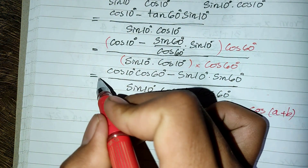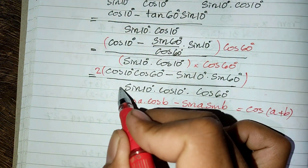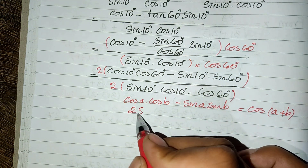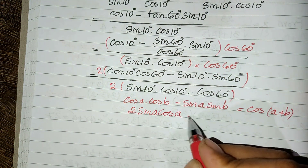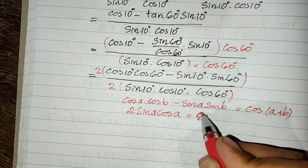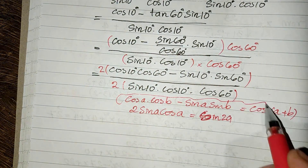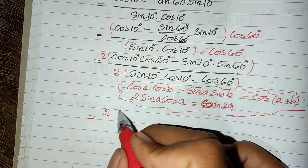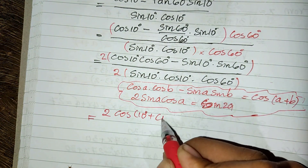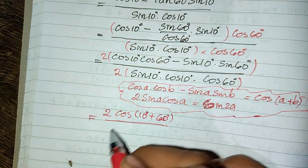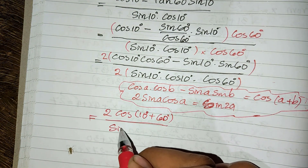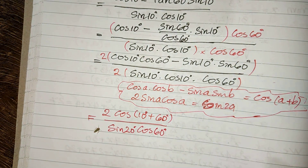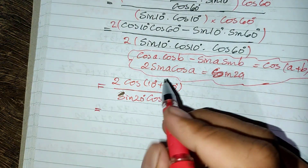Now I use this formula and multiply the numerator and denominator by 2. I also use the formula that 2 sine of A multiplied by cosine of A equals sine of 2A. Applying these formulas, it equals cosine of 10 plus 60 degrees divided by sine of 20 degrees multiplied by cosine of 60 degrees.